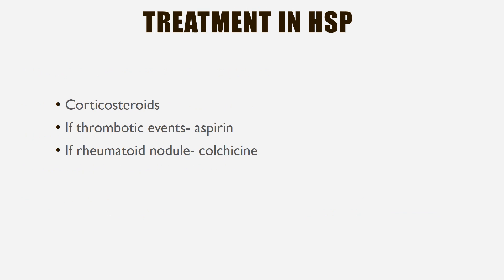Treatment of HSP is corticosteroids, given either orally as prednisolone 1–2 mg/kg/day, or injectable methylprednisolone 30 mg/kg/day continuously for three days, then repeated weekly or twice weekly. If the patient has thrombotic events, aspirin is given; if the patient has rheumatoid nodules, colchicine therapy should be used.